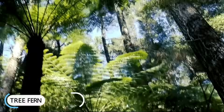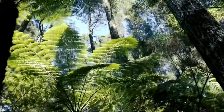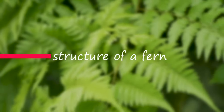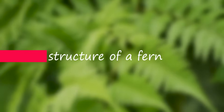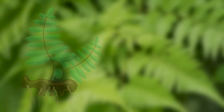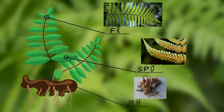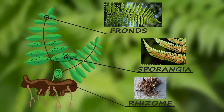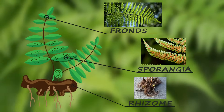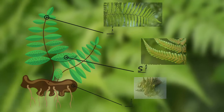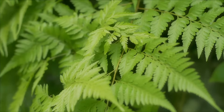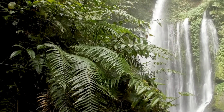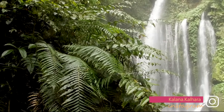Most ferns share the same basic structure. Ferns have three major parts: the rhizome, the fronds, and the reproductive structures called sporangia. The characteristics of each of these three parts of the fern plant are used for classification and identification.